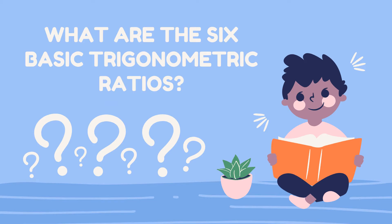Take note that the Pythagorean Theorem is applicable if our given is a right triangle. So now, what are the six basic trigonometric ratios? Since this is a new topic to you, you might not be familiar with what the six are. But if you get your scientific calculator, you will find there the words SIN, COS, and TAN. We will be encountering them in this lesson.